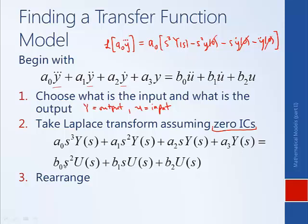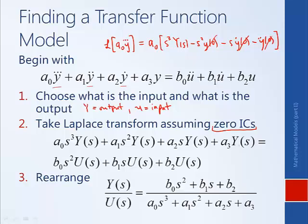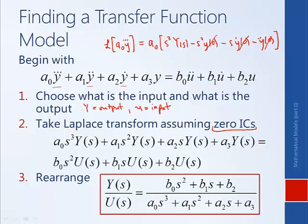On the right-hand side, we have our input U(s), which we can factor out. We can divide U(s) to the left in order to get output over input. And we can divide the polynomial in terms of the A coefficients to the right to give us this form. So this is our transfer function output divided by input.